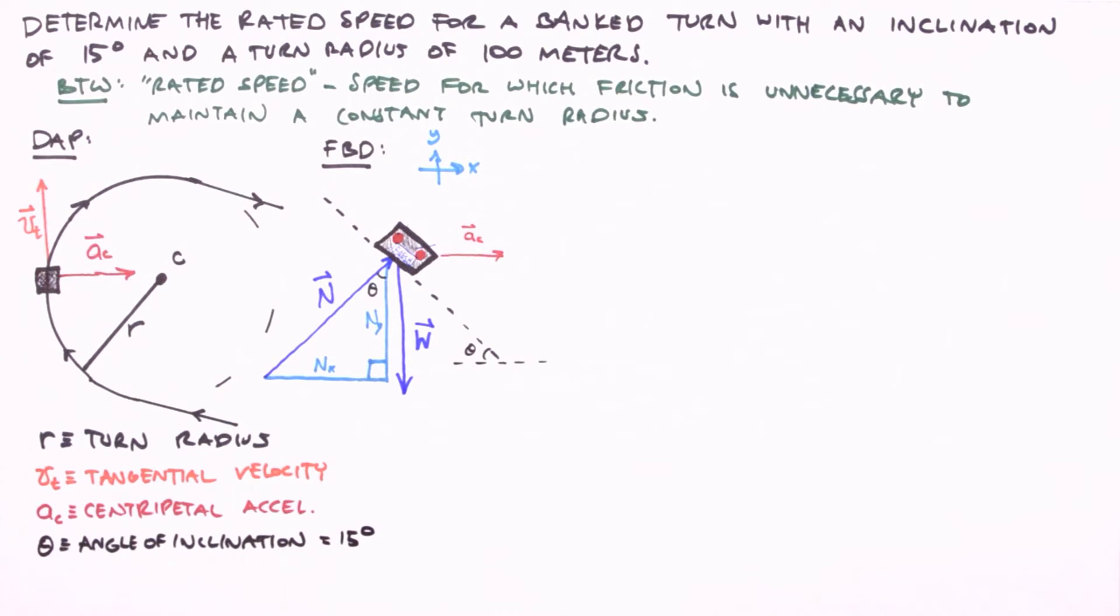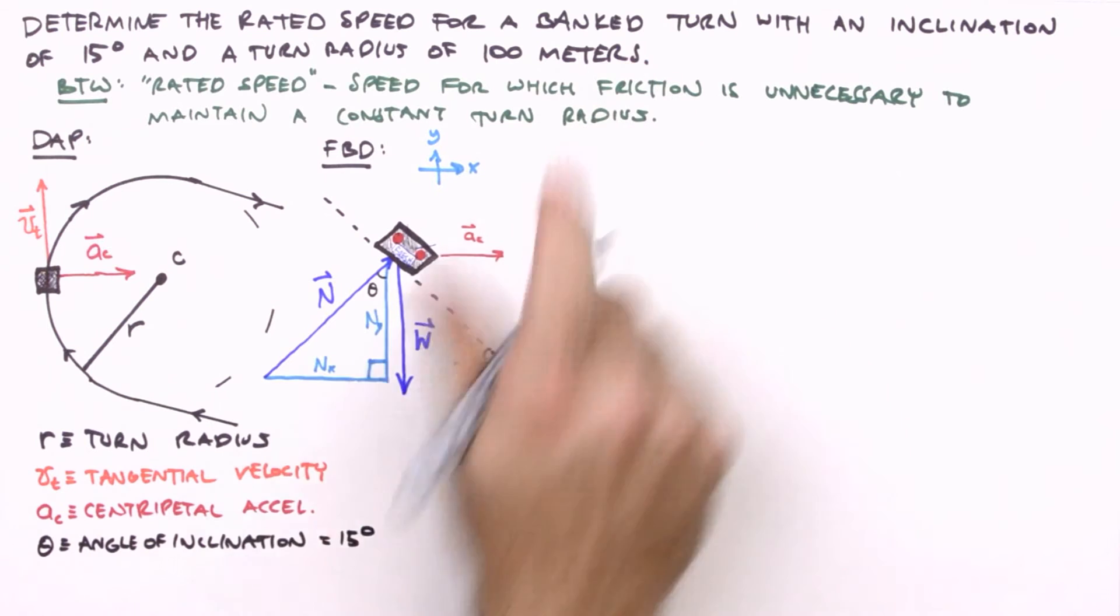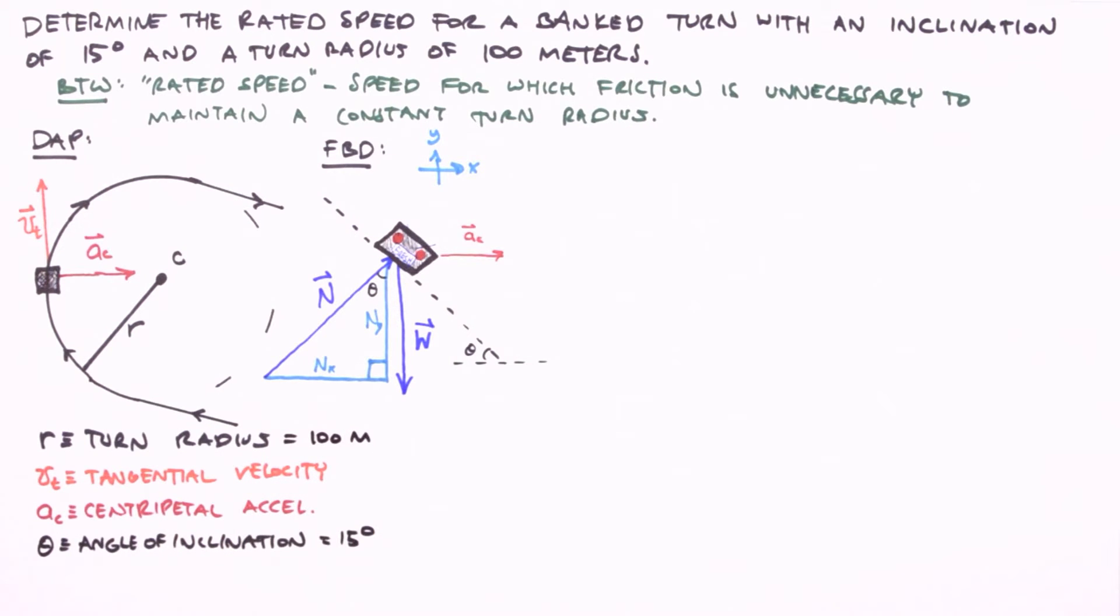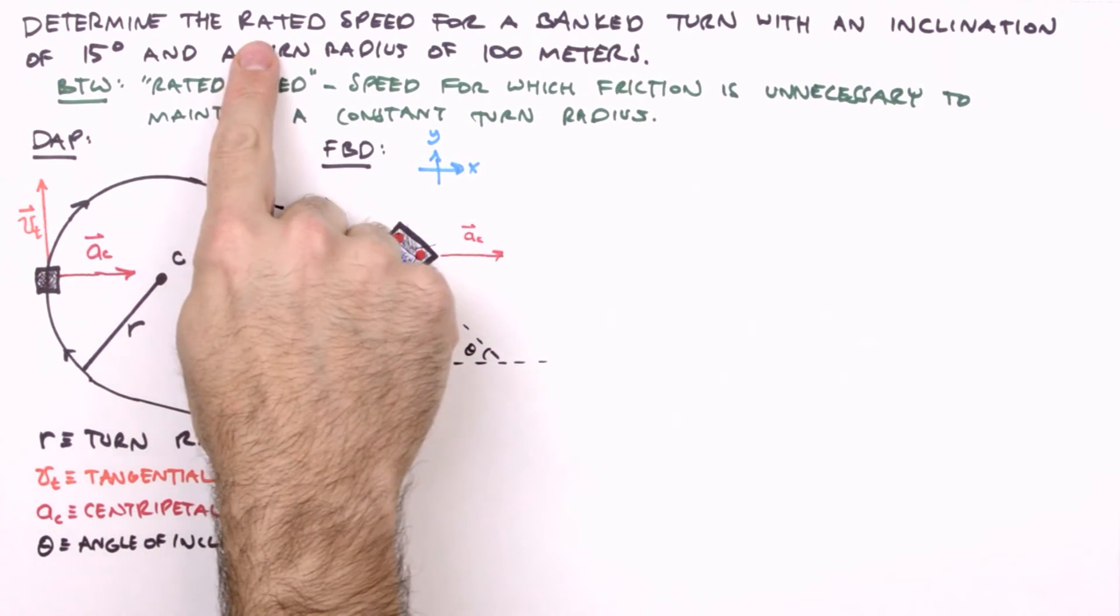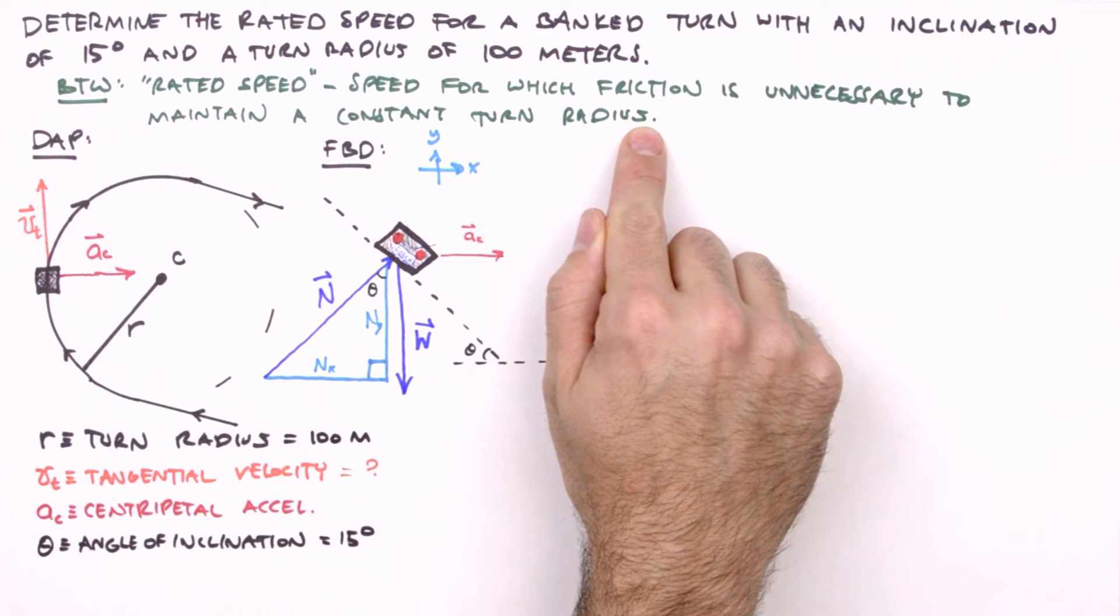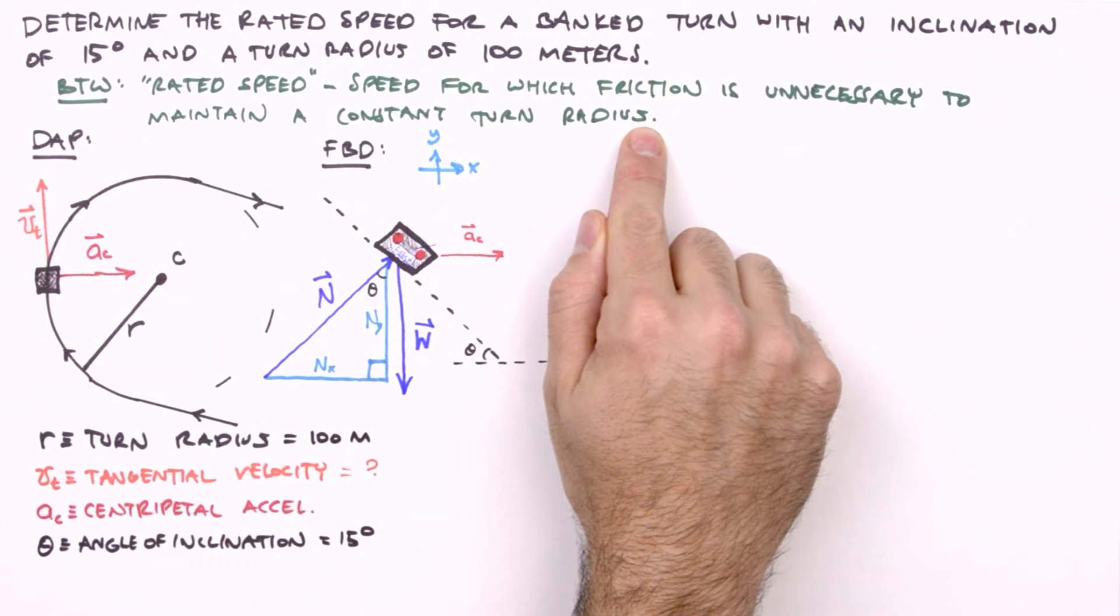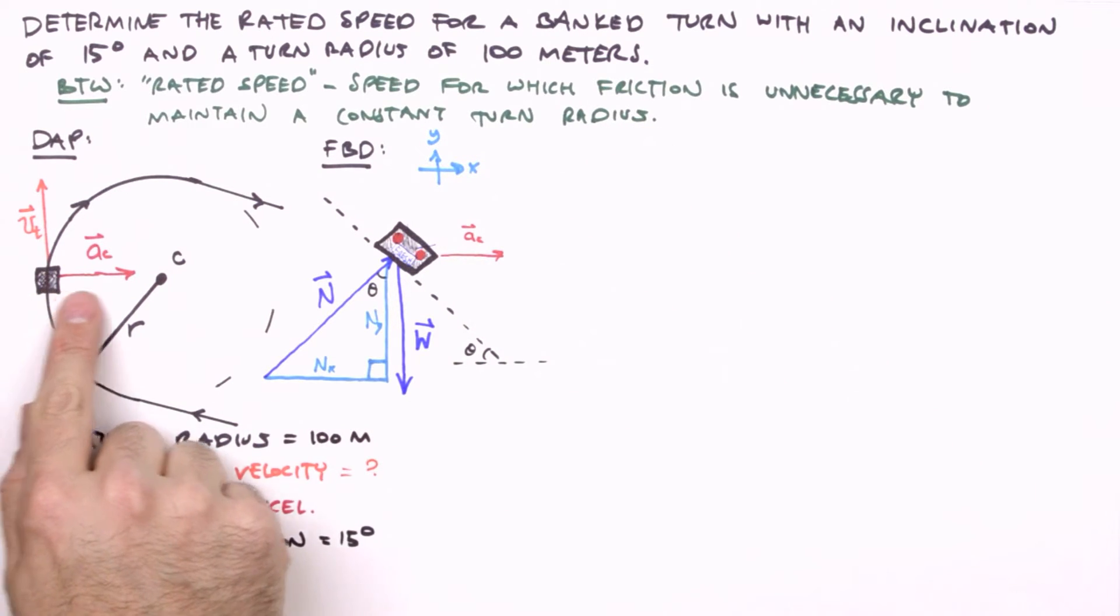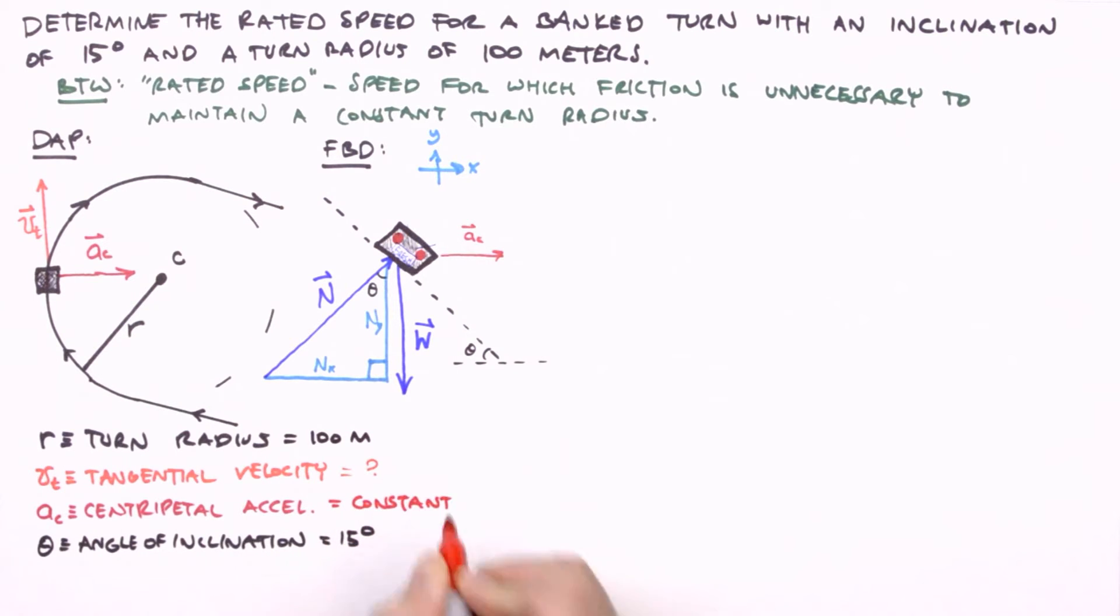Now our turn radius is also given to us in the wording of our problem, 100 meters. The tangential velocity is the rated speed of our turn, which makes it the unknown variable. Our task is to determine its value. Finally, the centripetal acceleration is not given, but its constancy is implied by our definition of rated speed. To maintain a constant turn radius is to undergo uniform circular motion, which implies a constant centripetal acceleration. And that does it for our knowns and unknowns.